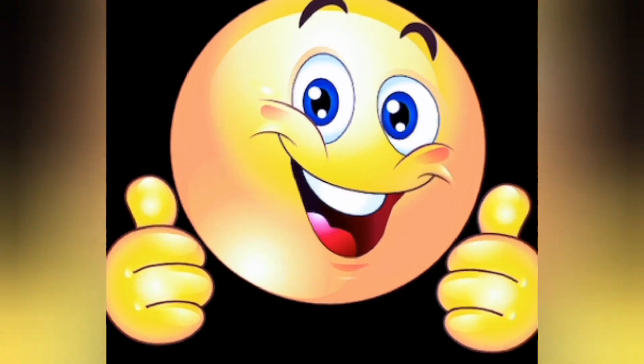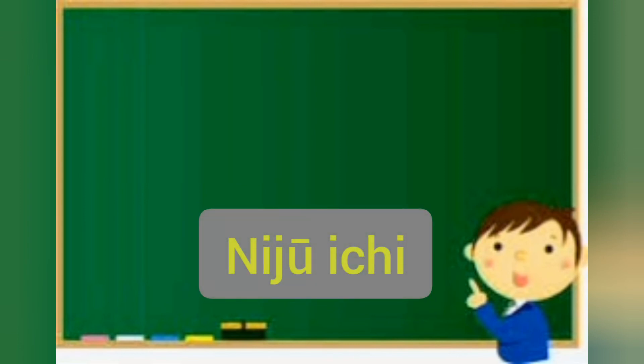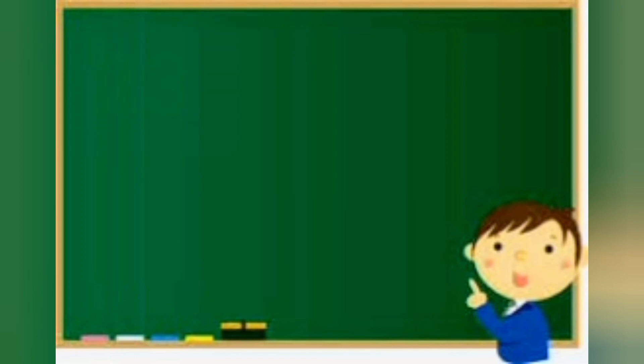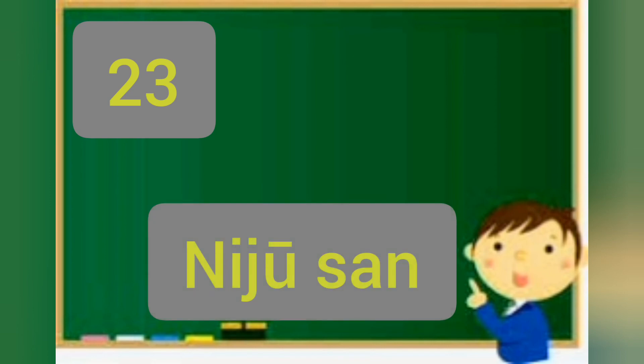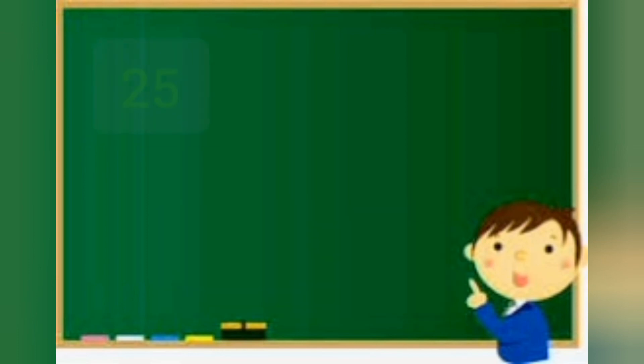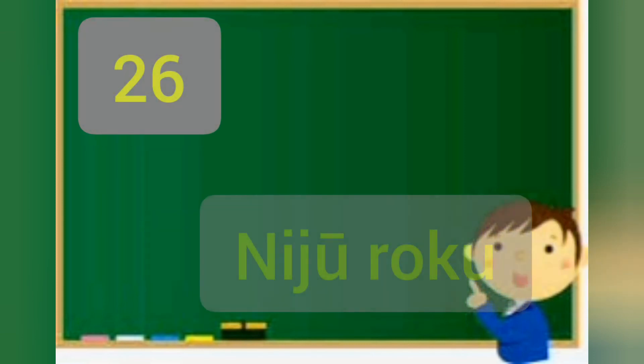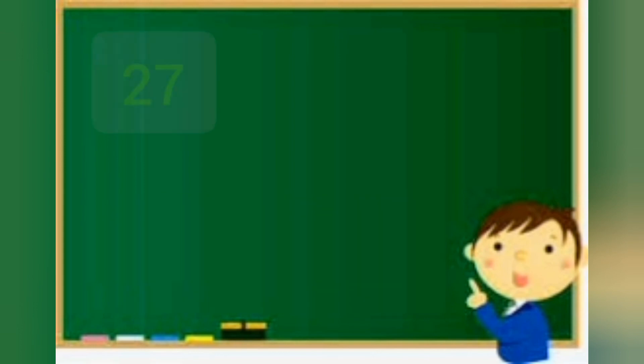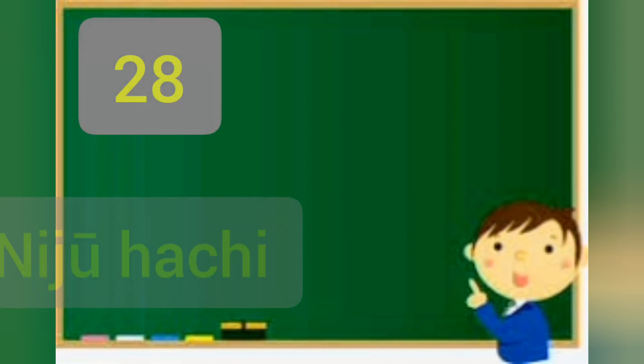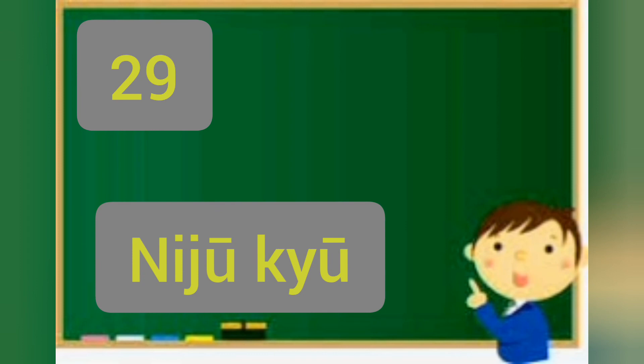Let's try other numbers. 21: ni-ju-ichi. 22: ni-ju-ni. 23: ni-ju-san. 24: ni-ju-yon. 25: ni-ju-go. 26: ni-ju-roku. 27: ni-ju-nana. 28: ni-ju-hachi. 29: ni-ju-kyu. The last one, 30: san-ju. Number 30 is san-ju.